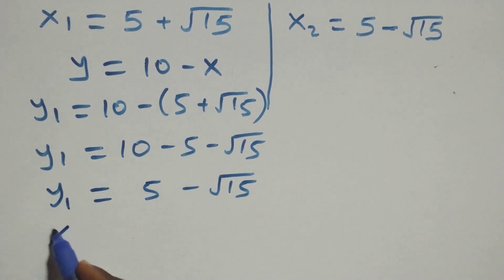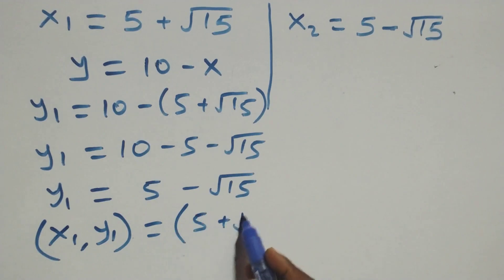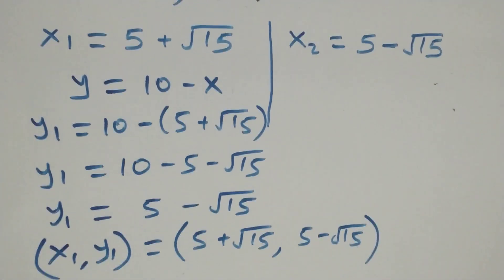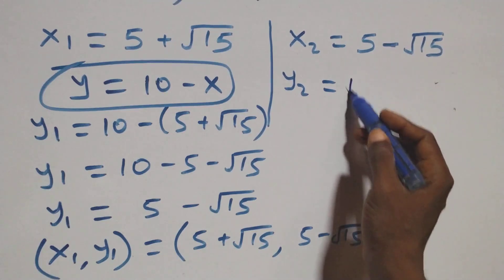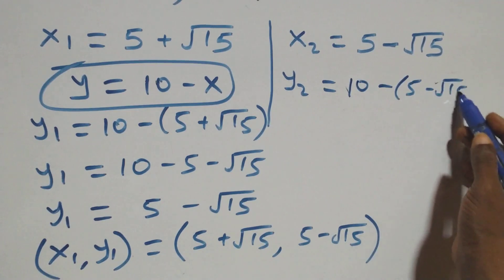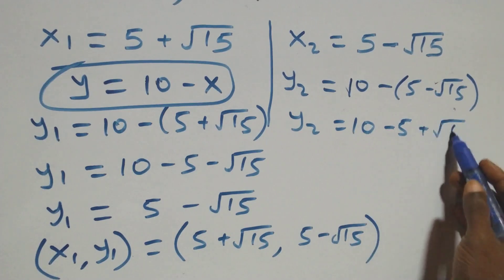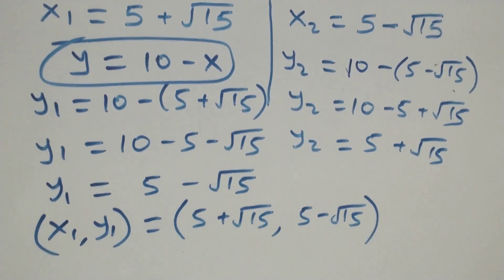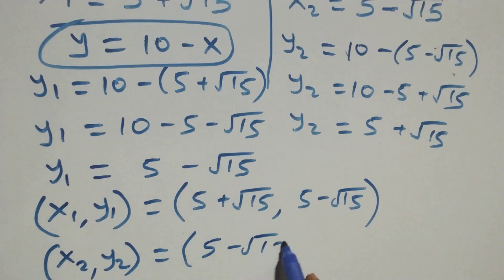The first set of solutions is x1 equals 5 plus root 15 and y1 equals 5 minus root 15. We also solve for y2 using the same relation: y2 equals 10 minus x2, which is 10 minus (5 minus root 15). Opening the bracket gives y2 equals 10 minus 5 plus root 15, so y2 equals 5 plus root 15. The second set of solutions is x2 equals 5 minus root 15 and y2 equals 5 plus root 15.